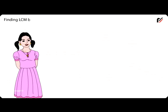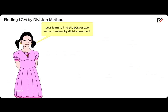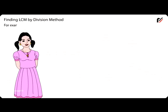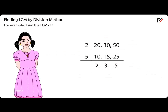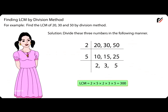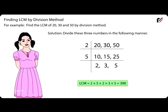Finding LCM by division method: For example, find the LCM of 20, 30 and 50 by division method. Divide these three numbers in the following manner. Thus, LCM = 2 × 5 × 2 × 3 × 5 = 300.